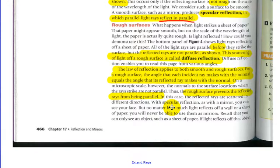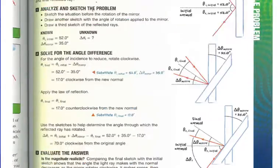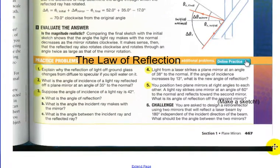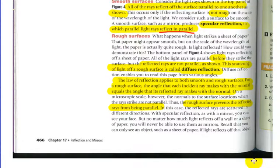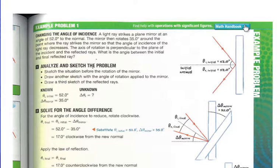In this case, the reflected rays are scattered in different directions. With specular or regular reflection, as with the mirror, you can see your face. But no matter how much light reflects off a wall or a sheet of paper, you'll not be able to use them as mirrors. Recall that you can only see objects such as a sheet of paper. If light reflects off that object... Oh, I guess that's it. I got cut off there. Off that object. Oh no, that was the end of the sentence. All right.